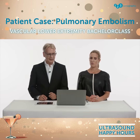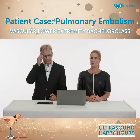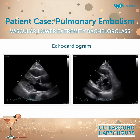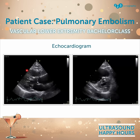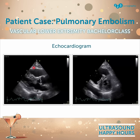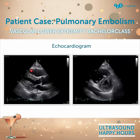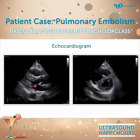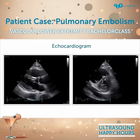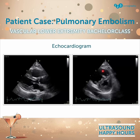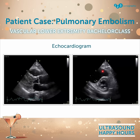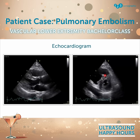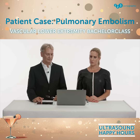Now let's take a look at the echocardiogram. In the parasternal long axis view you will appreciate that the right ventricle is dilated. The valves look normal, and we can confirm that the right ventricle is dilated in the short axis view. In addition, we see flattening of the interventricular septum.